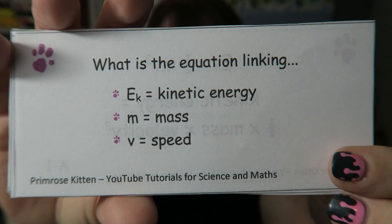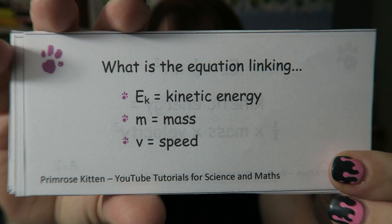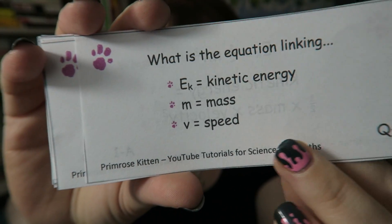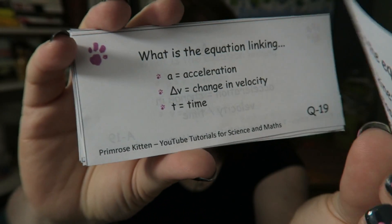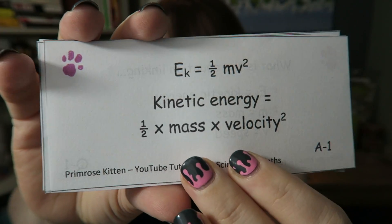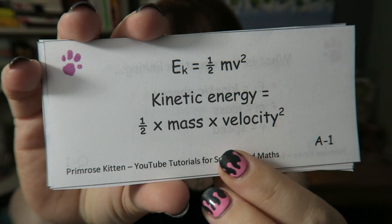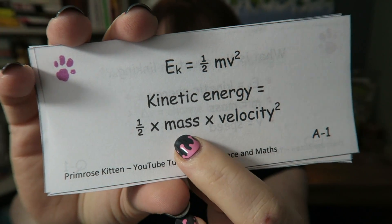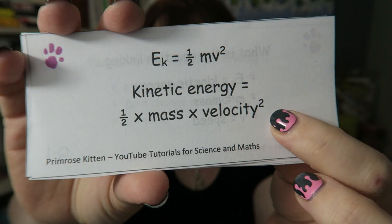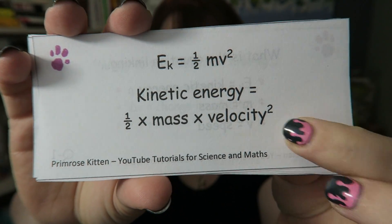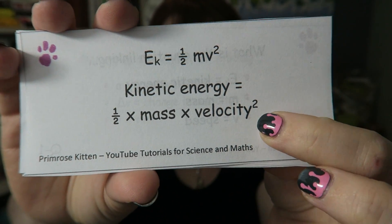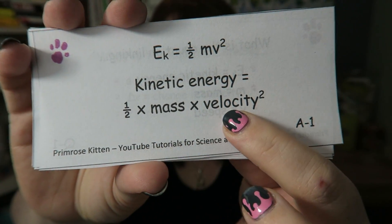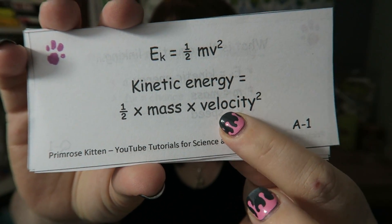What is the equation linking kinetic energy, mass, and velocity or speed? Kinetic energy is equal to half times mass times velocity squared. And this is just the velocity squared — not the whole thing, just the velocity.